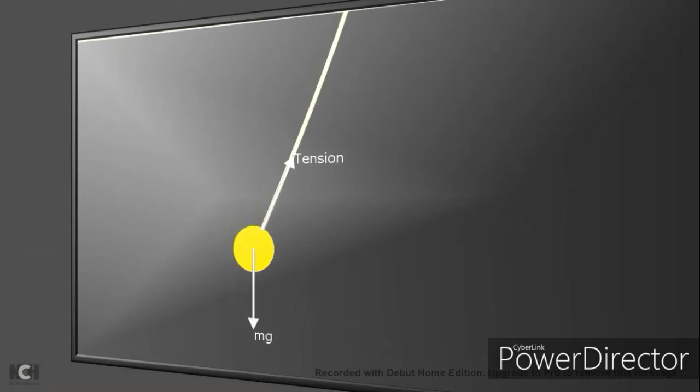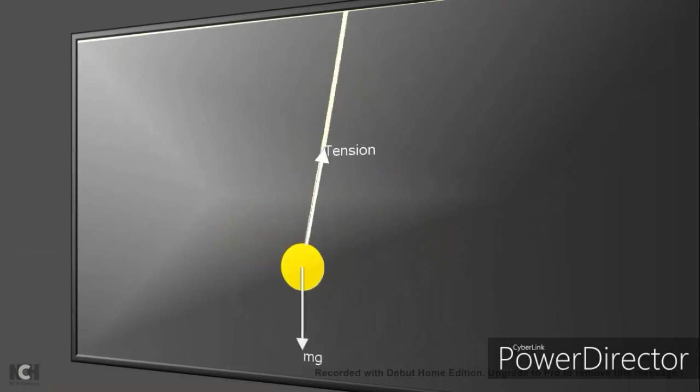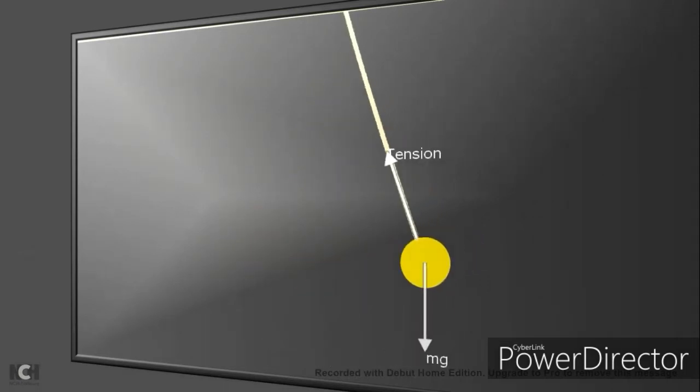There is a gravitational force mg that is pulling it down and a tension or restoring force in the rope which is pulling it upwards.